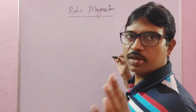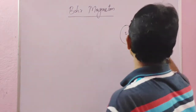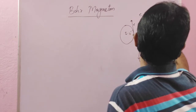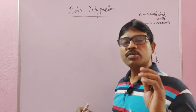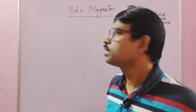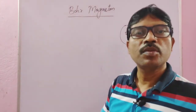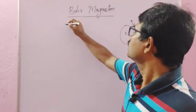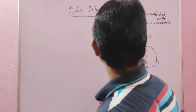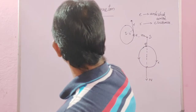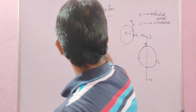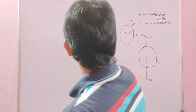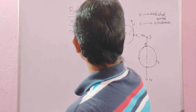The mass of the electron is 9.1 × 10⁻³¹ kg. Now the question is: what do you mean by Bohr magneton? Derive an expression for the revolving electron in circular orbits. How can you find its mathematical expression? First, let us write the definition, then the mathematical expression.